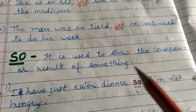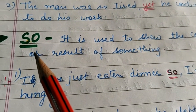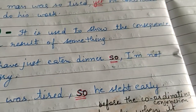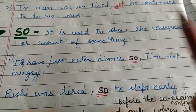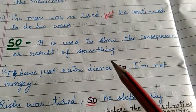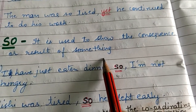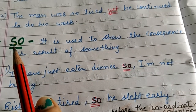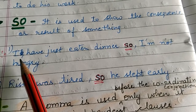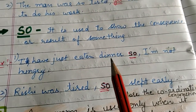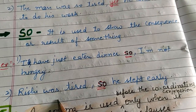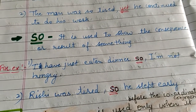Now the last conjunction is 'so'. It is used to show the consequence or result of something — kisi bhi condition ka result ya phir consequence. When we want to show the result or consequence of a situation, we use conjunction 'so'. Example: 'I have just eaten dinner, so I am not hungry.' Main ne apna khana abhi abhi khaya, isi liye I am not hungry — uska result. Another: 'Rishi was tired, so he slept early.' Rishi bhaut tired tha, to uska result hua — voh jaldi so gaya.